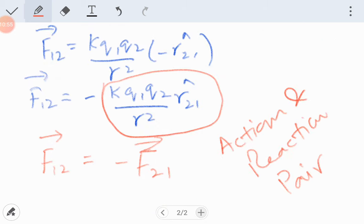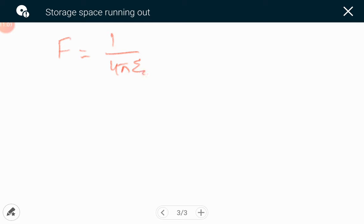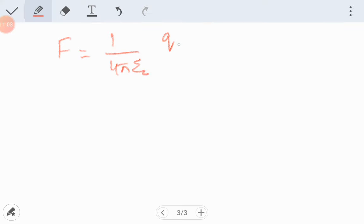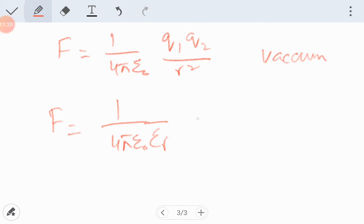And if we use any other medium than vacuum, so if 1/(4π ε₀) is for vacuum, and we are using any other medium, then it will be 1/(4π ε₀ εᵣ) times q1 q2 over r². This was for other mediums.